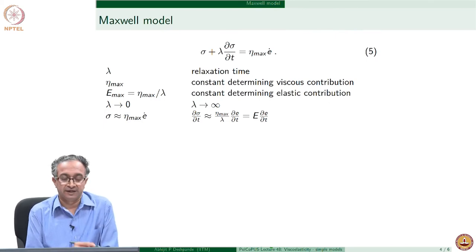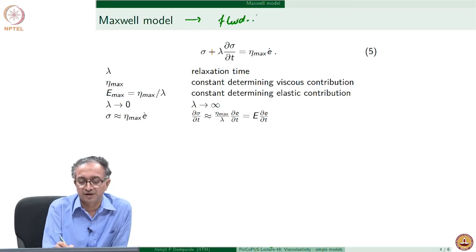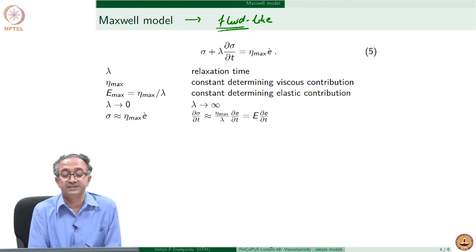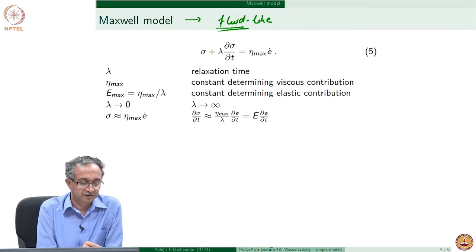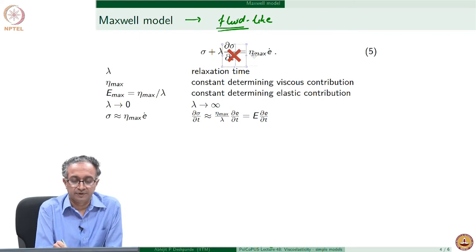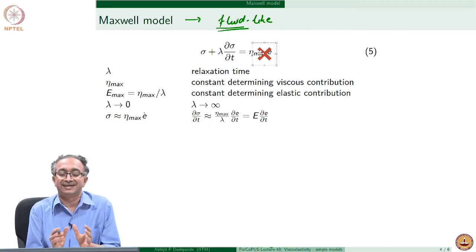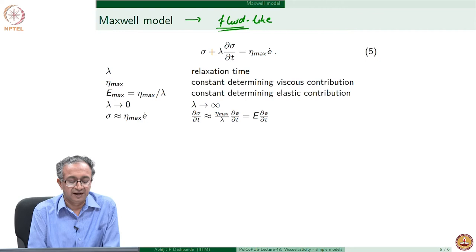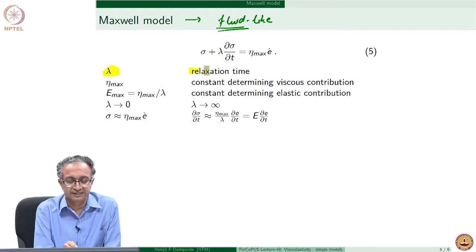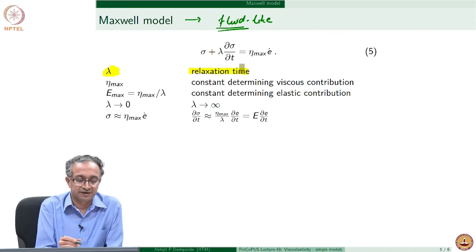The Maxwell model is another example. It is more useful for fluid-like systems, and we will see that its response is more dominantly viscous in nature, while the Voigt model had more dominant elastic or solid-like nature. By cancelling one term or the other, you can obtain both viscous and elastic limiting responses. The characteristic time here is called the relaxation time, which indicates how fast the relaxation processes are in the material.